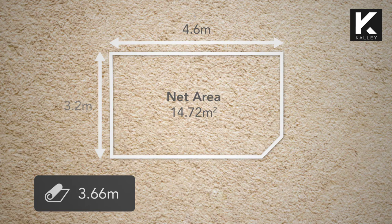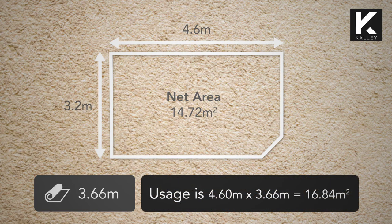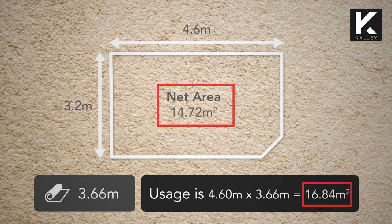The 3.66 metre carpet is wider than one of the axes, so the usage is 4.6 metres by 3.66 metres, equaling 16.84 metres squared. Let's confirm if this is greater than the net area above. The usage is greater than your net area, so you will be purchasing 16.84 metres squared or 4.6 lineal metres of carpet.